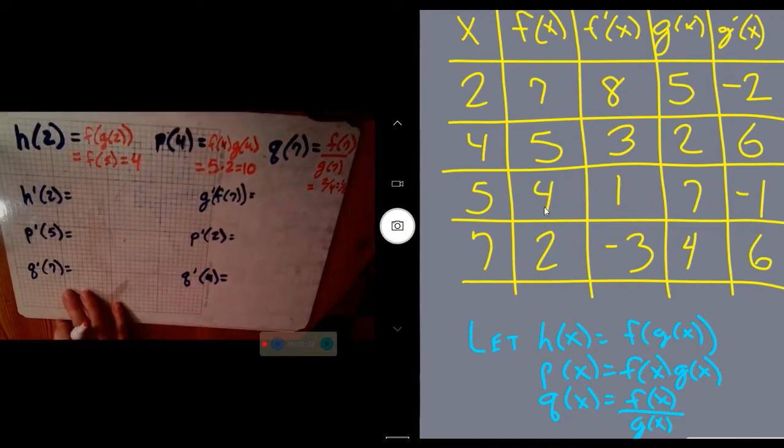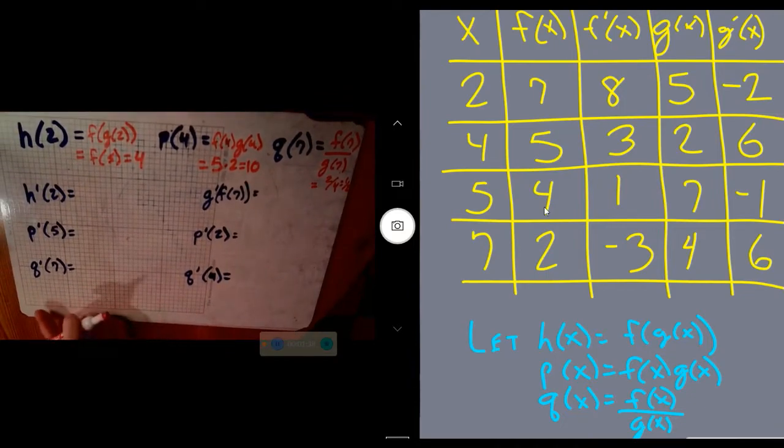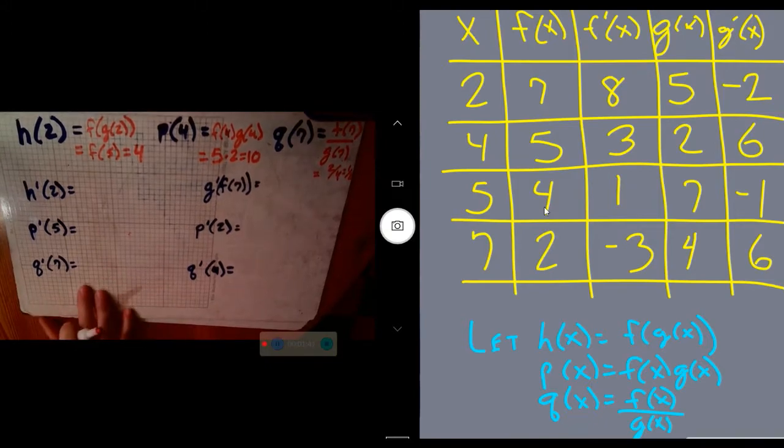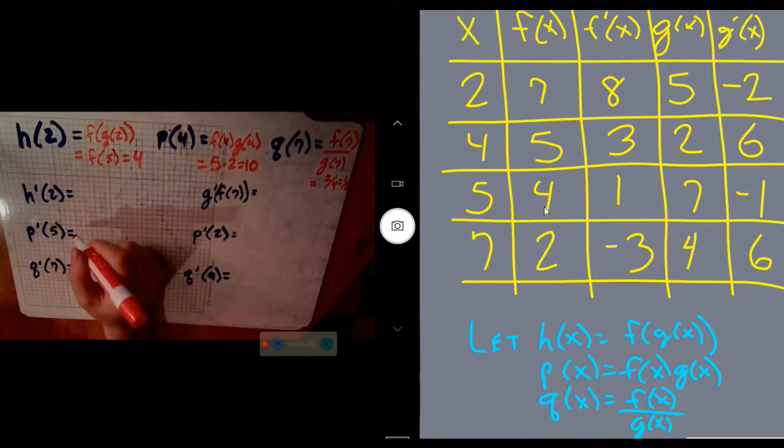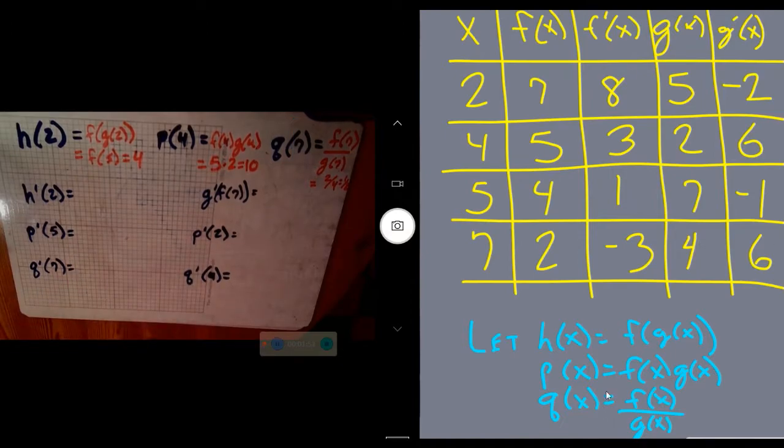That's some of the easy stuff. Now to get into these ideas using product, quotient, and chain rule. Let's do product rule here first: p'(5). p is f times g, so we need to be using the product rule based on this f times g.